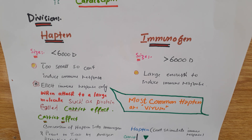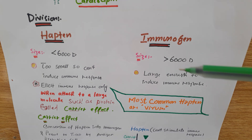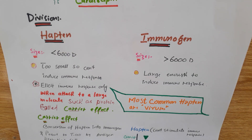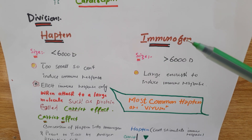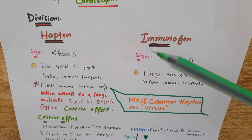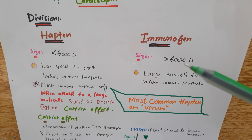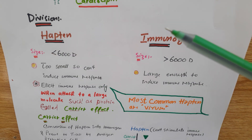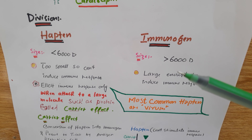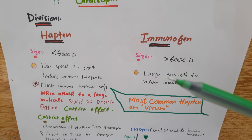The small antigen for which the size is less than 6,000 daltons cannot elicit or stimulate the immune system. That's why it is called hapten. Another one is immunogen — the immunogen size can be larger than 6,000 daltons. The hapten size is less than 6,000 daltons and the immunogen size will be more than 6,000 daltons.